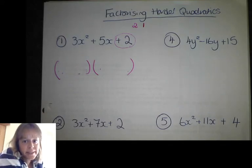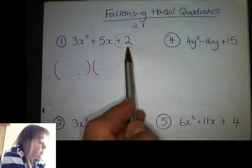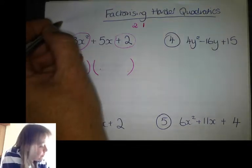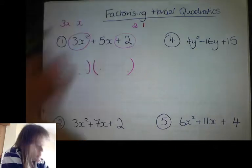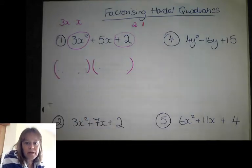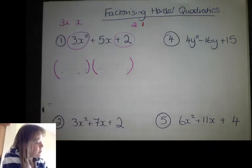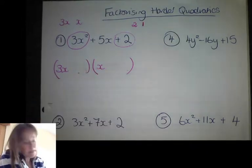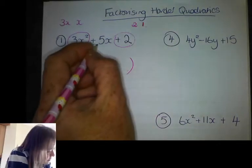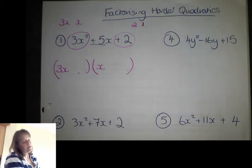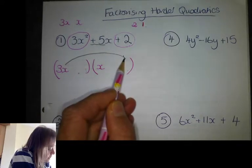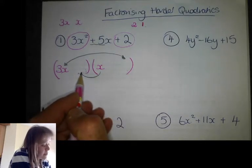Without the signs, I'll put the signs in at the end. Two times one gives me two. Then at the beginning I need to think of everything that multiplies to give me 3x squared — the only thing I can think of is 3x and x. Sometimes there'll be more than one choice here. So I'm going to put the 3x in one bracket and an x in the other bracket, and now I need to do a little bit of trial and error with this two and this one to find something that makes five.